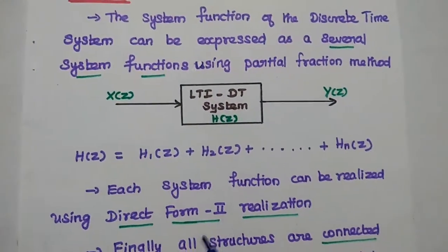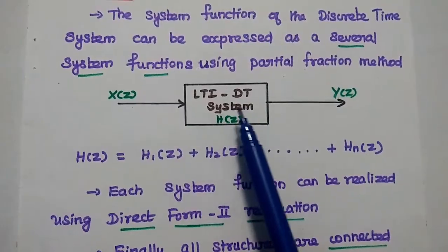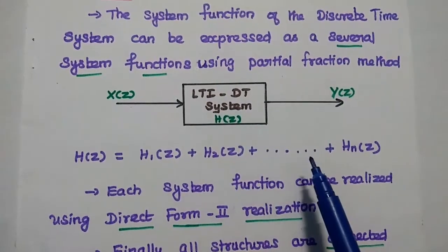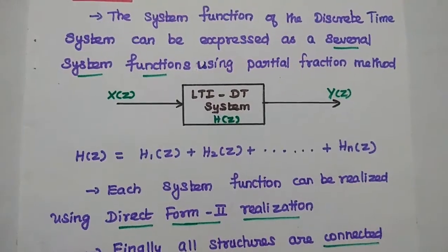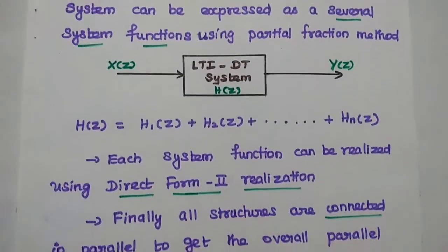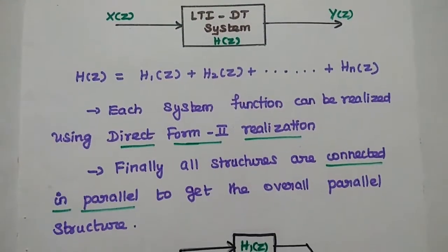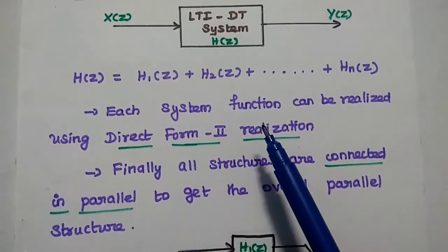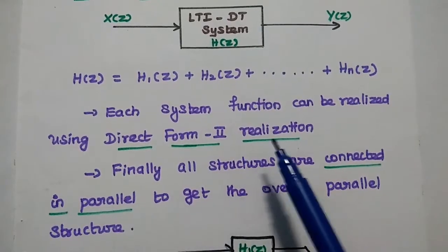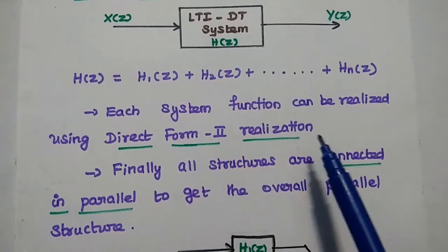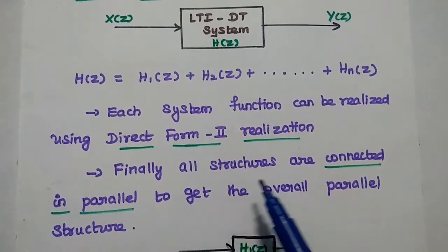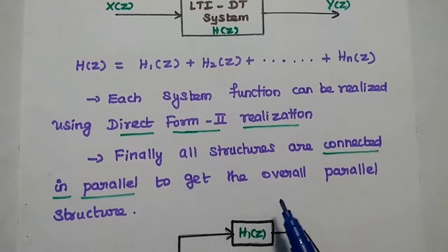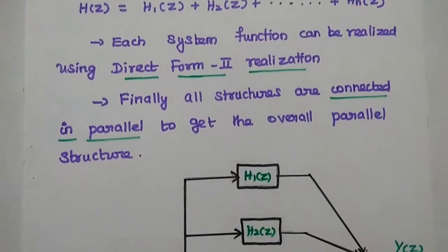We are going to express the given system function H of Z as a sum of several system functions using the partial fraction method. Then we have to realize each system function using direct form 2 realization method. Finally, all structures are connected in parallel to get the overall parallel structure.